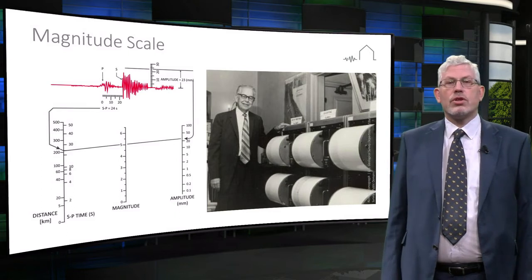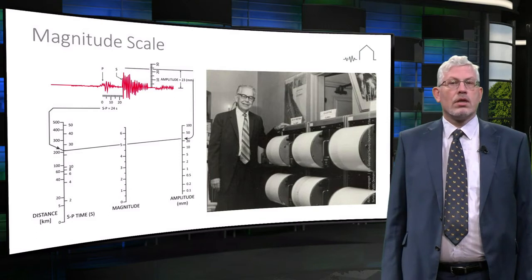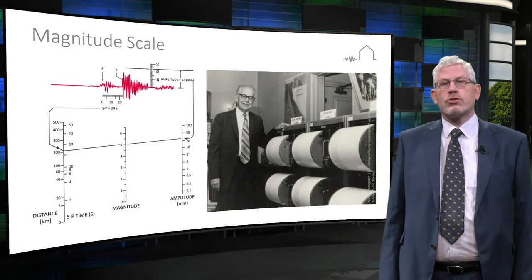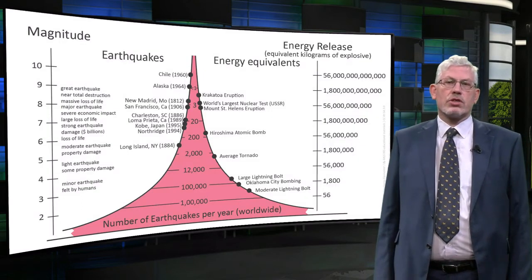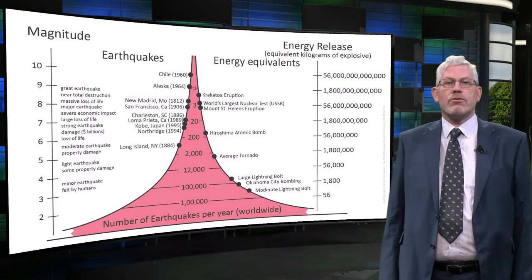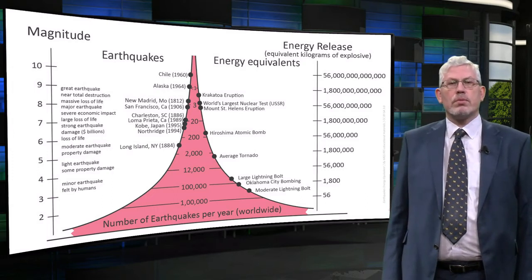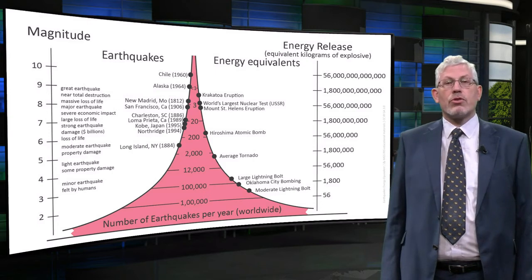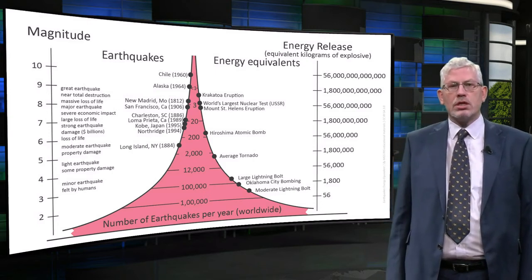The magnitude of an earthquake is determined from the logarithm of the recorded amplitude of the waves. Seismologists now use the moment magnitude scale in preference to the Richter scale. Because of the logarithmic basis of the scale, each whole number increase in magnitude represents a tenfold increase in the measured amplitude. In terms of energy, each whole number step in the magnitude scale corresponds to a release of about 32 times more energy than the amount associated with the preceding whole number value.